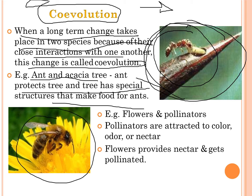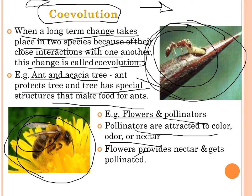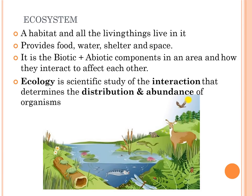Another example of co-evolution is flowers and pollinators. Bees as pollinators are attracted to the color, odor, or nectar of a flower. The flower provides nectar and gets pollinated in return — another example of co-evolution.